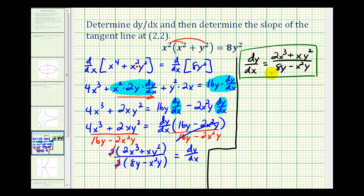But now we want to evaluate this at the point (2,2). So we'll substitute 2 for x and 2 for y. So 2 cubed would be 8, 8 times 2 would be 16, plus 2 times 2 squared, that's going to be 8. Our denominator is going to be 8 times 2, that's 16, and this will be 2 squared times 2, so we'll have minus 8.